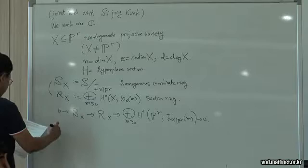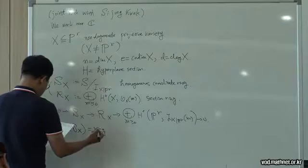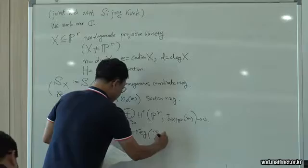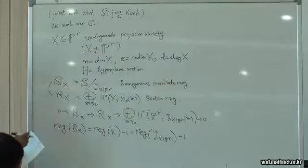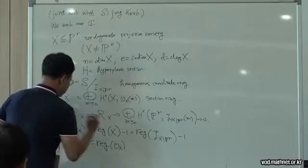The regularity of the homogeneous coordinate ring of X is the regularity of X minus 1. This regularity of the variety is by definition the regularity of the ideal sheaf. And the regularity of the section ring of X is equal to the regularity of the structure sheaf.